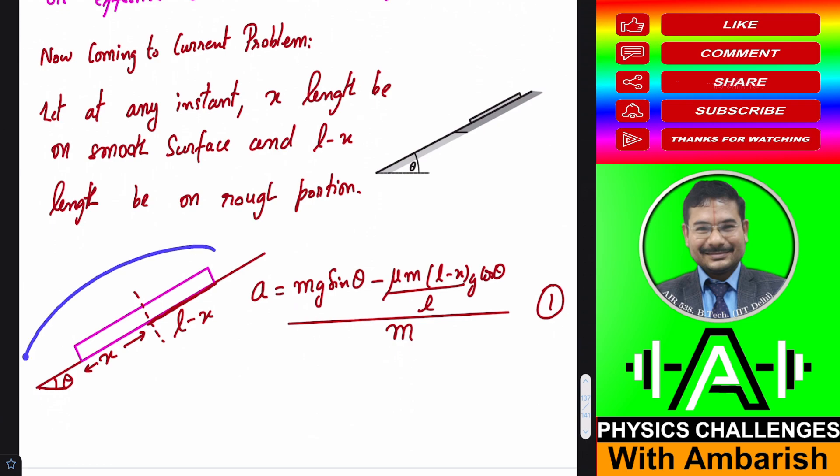First of all, I have found the combined acceleration of this bar. There is mg sine theta acting downwards, and then mu mg cos theta is acting only on this much. Mass of this will be m times (l minus x) upon l. So the net acceleration becomes g sine theta minus mu times (l minus x) by l times g cos theta, which is net force divided by net mass.